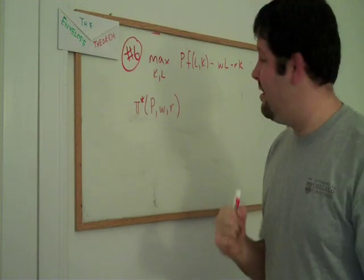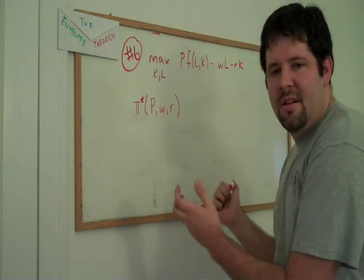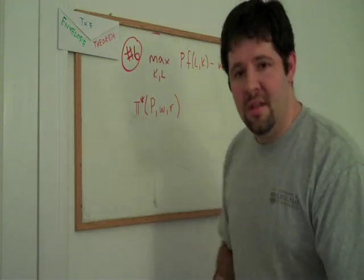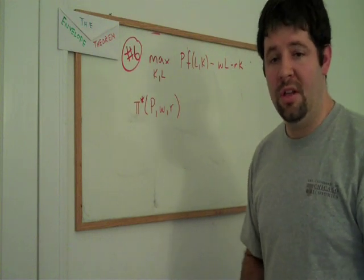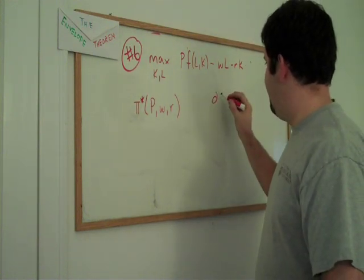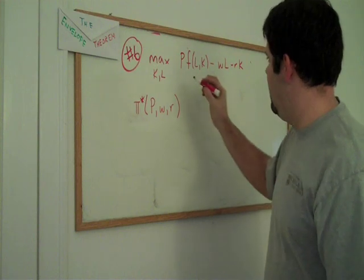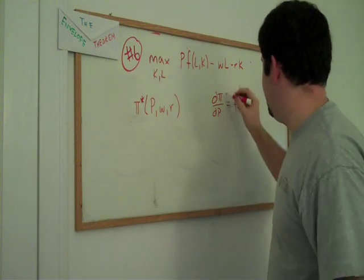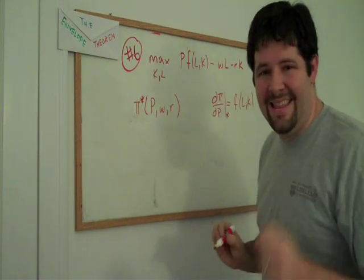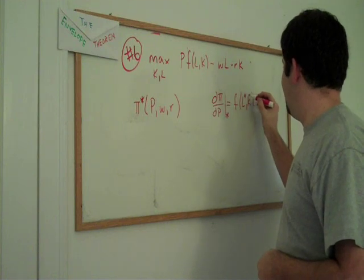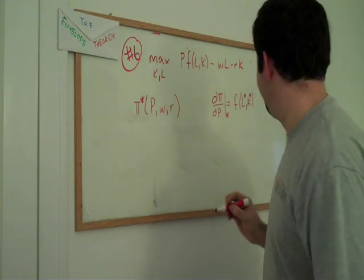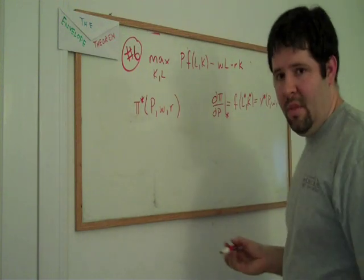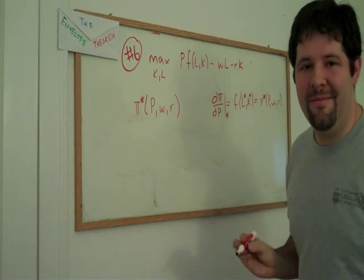And what we can say is that once we have this indirect profit function, we can apply the envelope theorem to it because it is an objective function. Notice this isn't a constrained optimization, but the envelope theorem also works in the unconstrained optimization world as well. So let's take the derivative of the objective function with respect to price. But the envelope theorem, if we're going to apply it, we need to evaluate at the optimum.